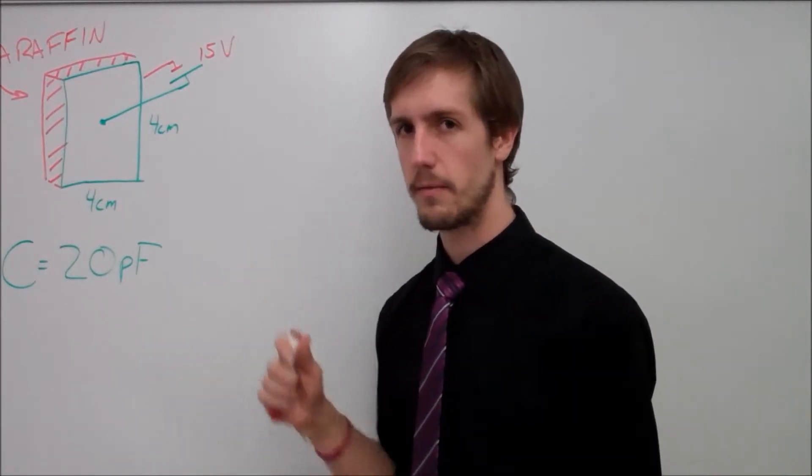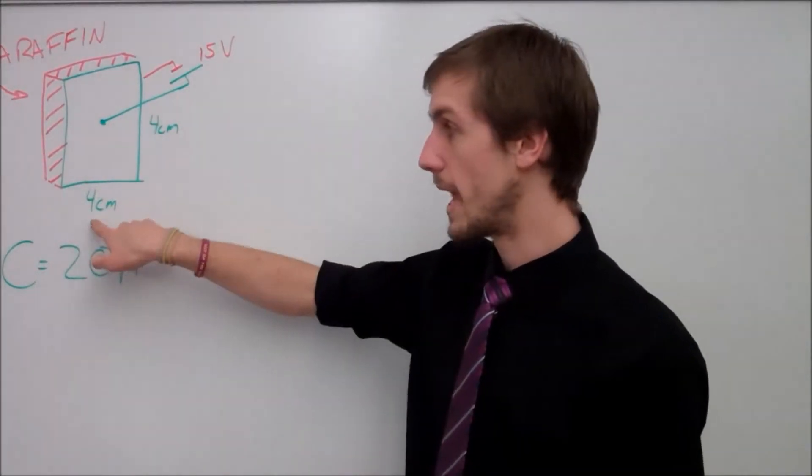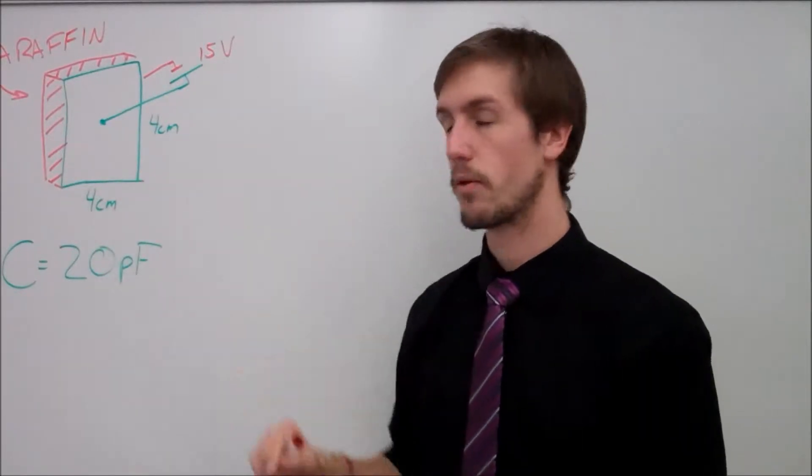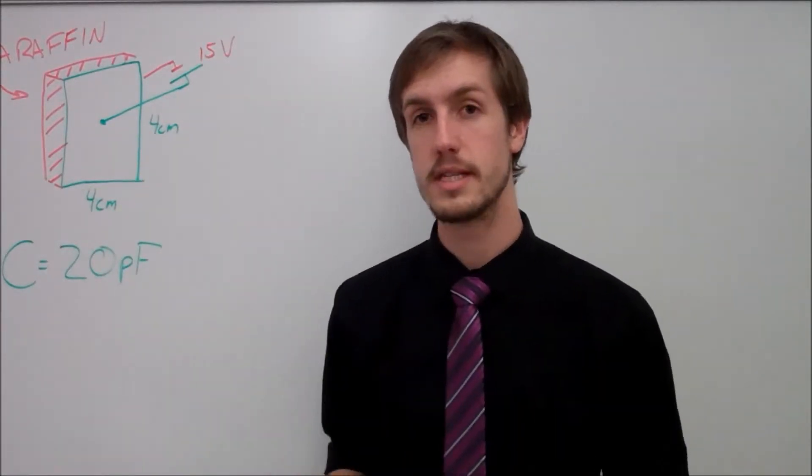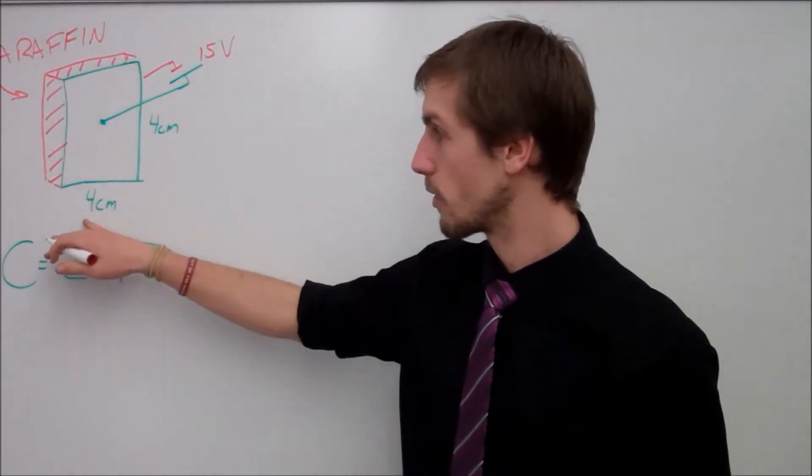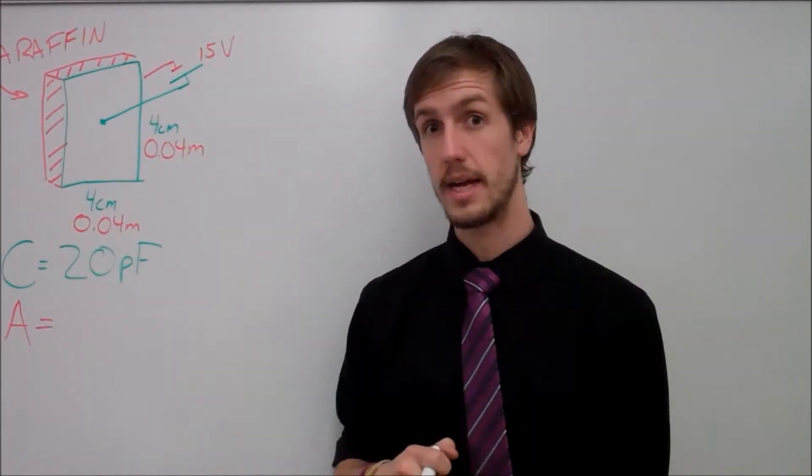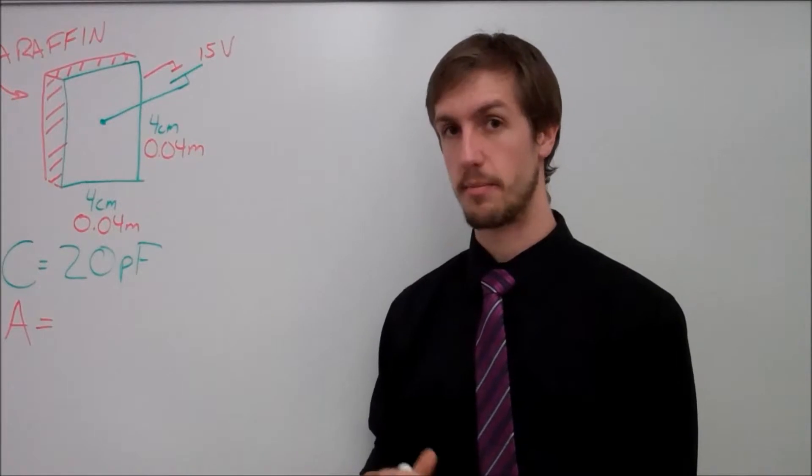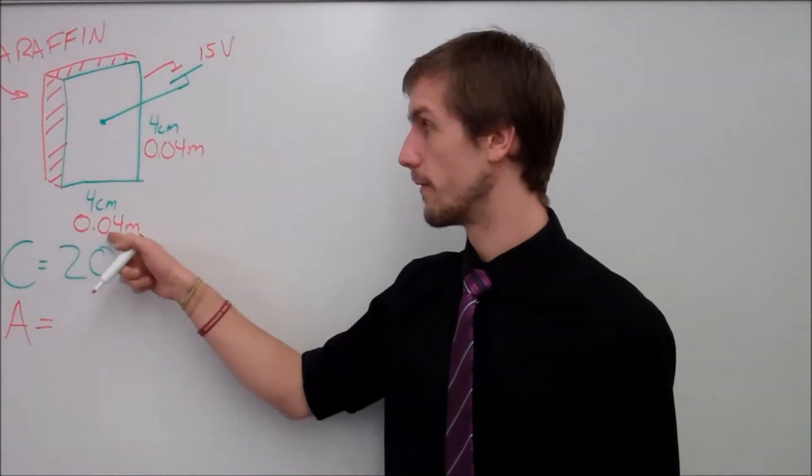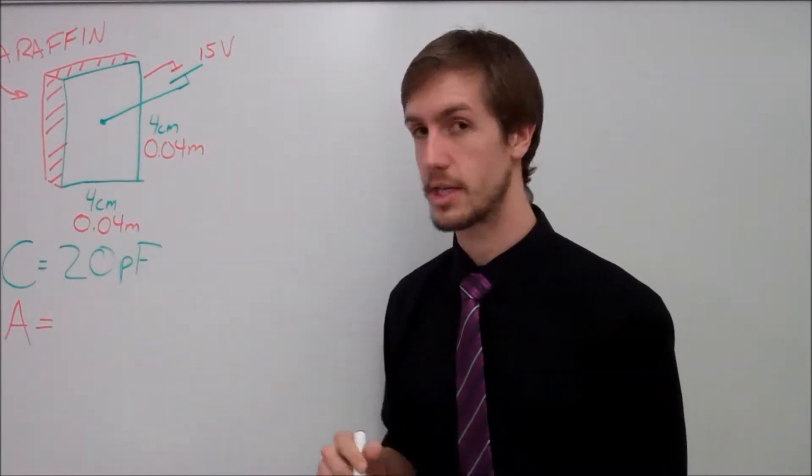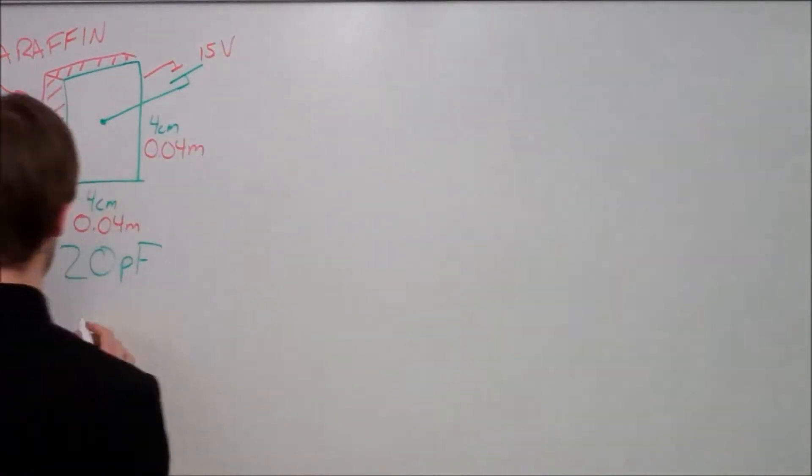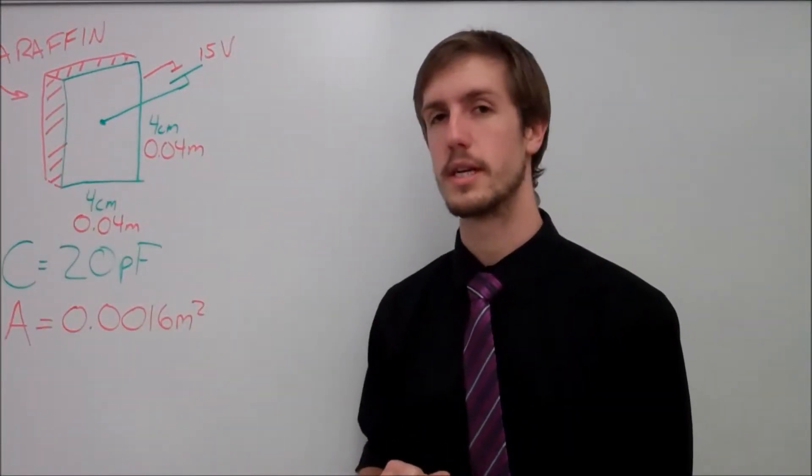What I can get from the information right now is I can find out what my area is. I know 4 centimeters and 4 centimeters. I need to turn both of these into meters. So 4 centimeters is actually 0.04 meters, which is then if I find out what my area in terms of meters squared is, if I take 0.04 multiplied by 0.04, I should get a value of 0.0016 meters squared.